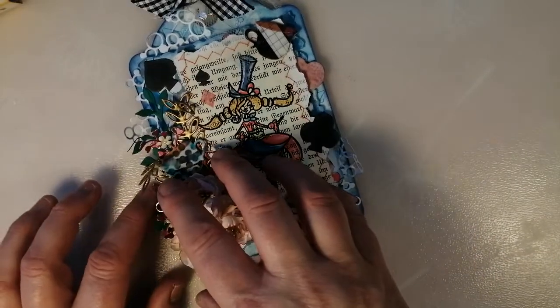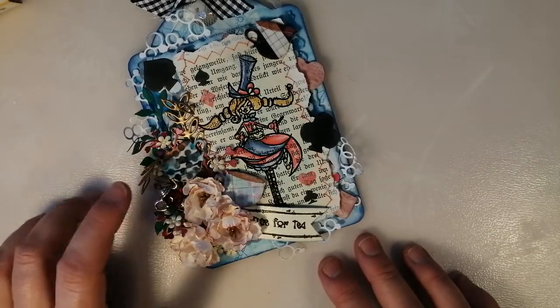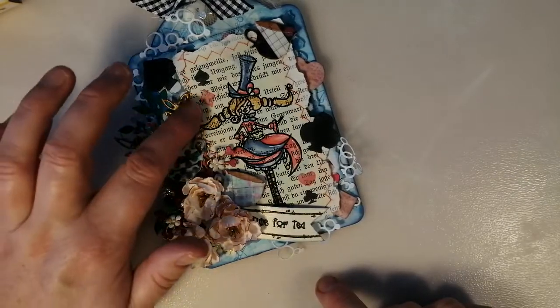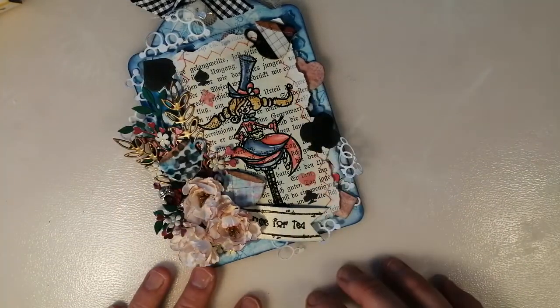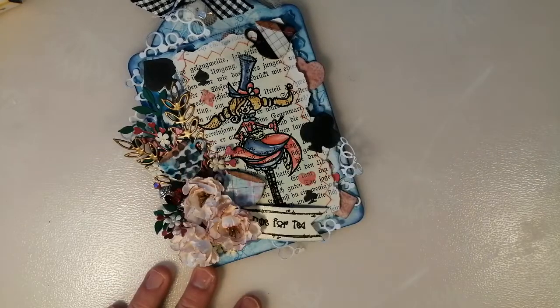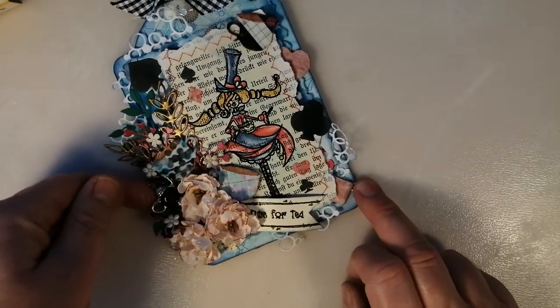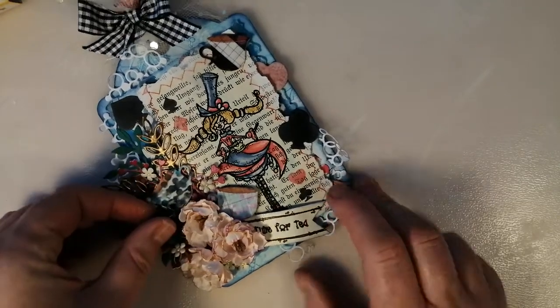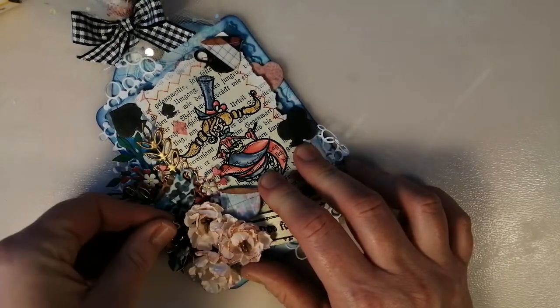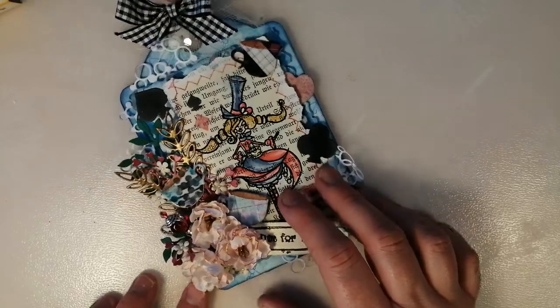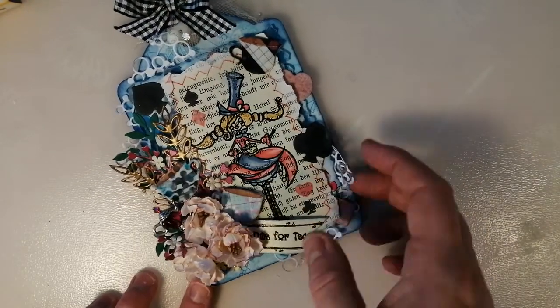When I was on the JMC Designs design team, I made this for Craft Stamper magazine. This was the image, Hattie from the Alice in Wonderland-inspired collection. I'd got these lovely little teacups, and I'd stamped the time for tea, and I just thought a teapot stick pin would be amazing. I made a little teapot stick pin which is stuck into my little floral cluster here, and I just think that's gorgeous.